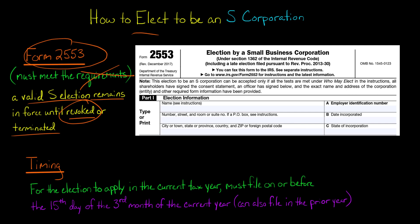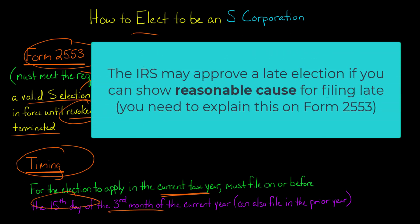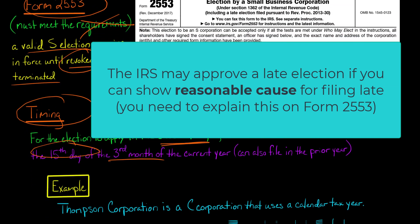In terms of the timing of filing this election, for the election to apply in the current tax year, you need to file on or before the 15th day of the third month of the current year. You can also file in the year before that.